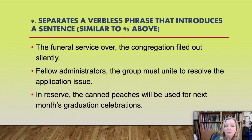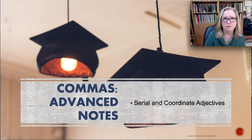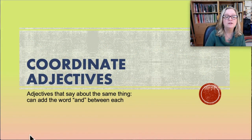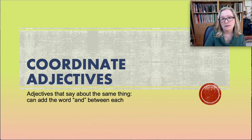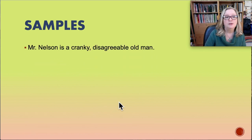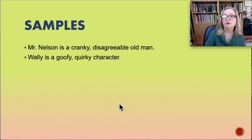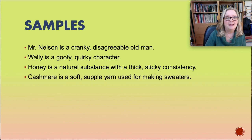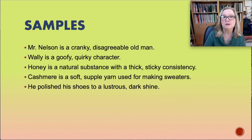Now for some advanced notes to help you tell the difference between different kinds of adjectives. First, a quick review of coordinate adjectives — adjectives that say about the same thing. You can add "and" in between, but instead of the "and" you use a comma. Examples: Mr. Nelson is a cranky, disagreeable old man. Wally is a goofy, quirky character. Honey has a thick, sticky consistency. Cashmere is a soft, supple yarn. He polished his shoes to a lustrous, dark shine. Each pair says about the same thing, so you could put "and" between them.